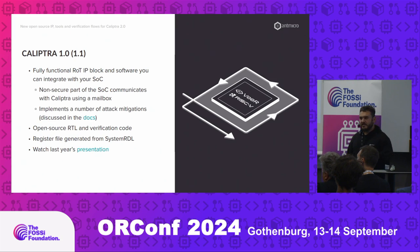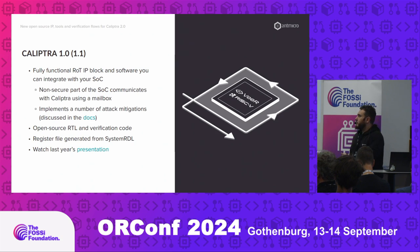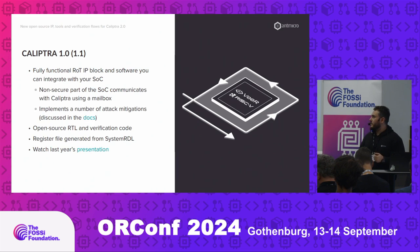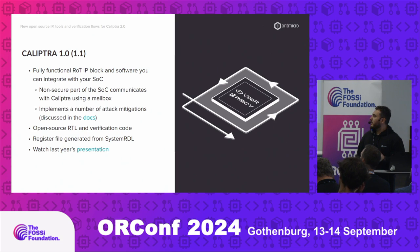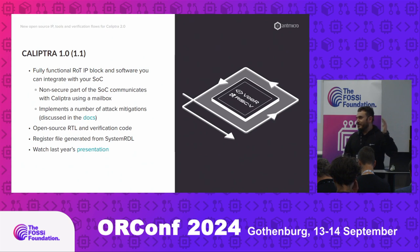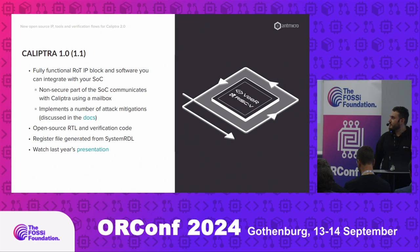The core itself can simply be put into your bigger design. You connect the communication interface through a mailbox — you just need to be able to write to the mailbox and read data back from the Calyptra core. You need to provide all the connectivity: clock sources, entropy sources, all that stuff. But in general, you can grab the design and just use it. It also comes with software, so you don't have to worry about writing that. If you're interested in how certain attack mitigations are implemented or what standards are used within the design, you can simply refer to the documentation — it's all there.